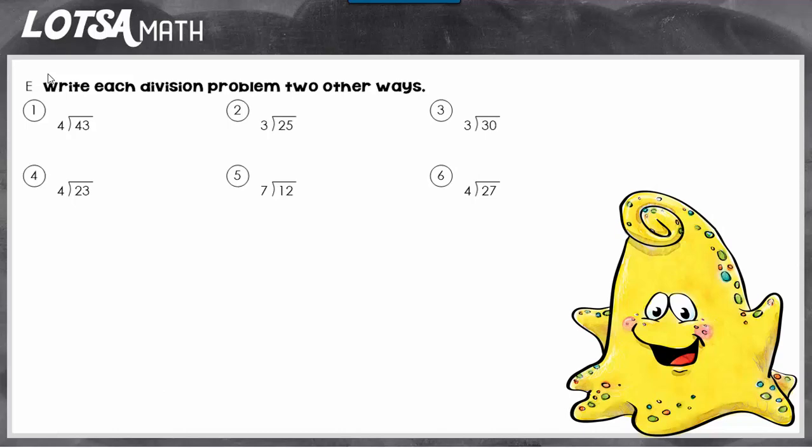For number one, we see 43 divided by 4. When you see a division problem written this way, make sure you read what's inside of the box first and outside afterwards, so it's 43 divided by 4, but you can also write it another way, you could write it 43 divided by 4.